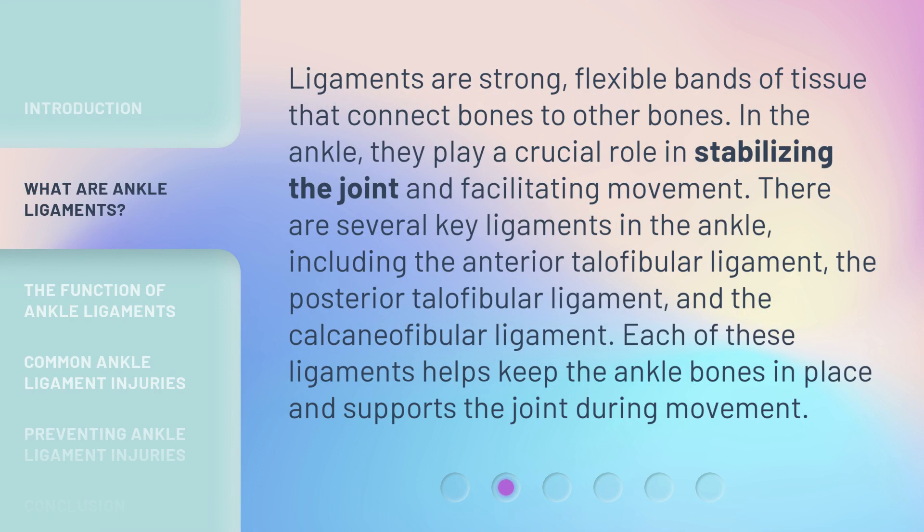Ligaments are strong, flexible bands of tissue that connect bones to other bones. In the ankle, they play a crucial role in stabilizing the joint and facilitating movement. There are several key ligaments in the ankle, including the anterior talofibular ligament, the posterior talofibular ligament, and the calcaneofibular ligament. Each of these ligaments helps keep the ankle bones in place and supports the joint during movement.